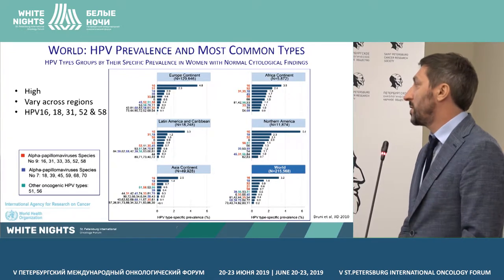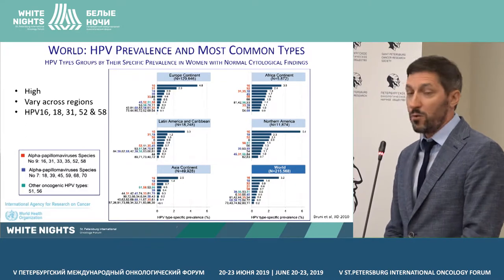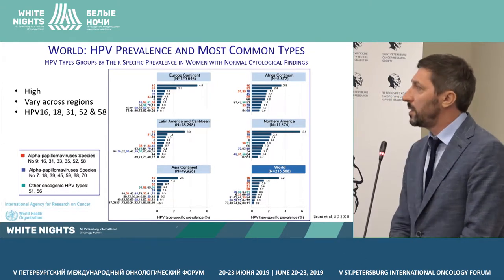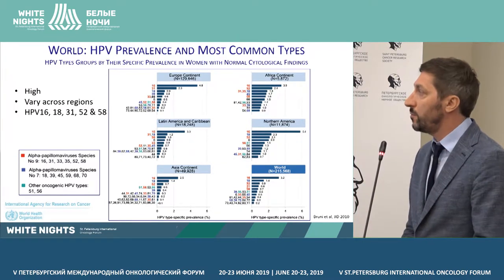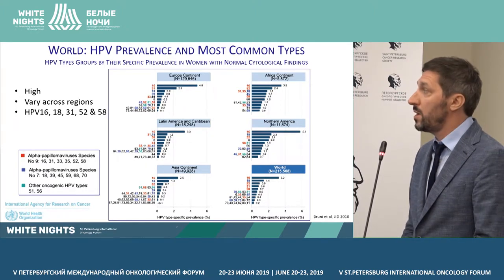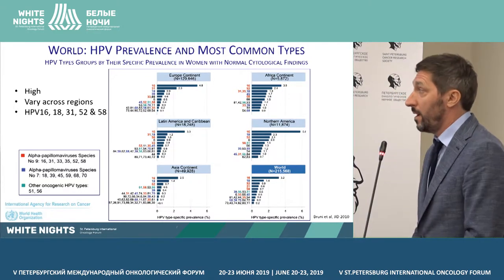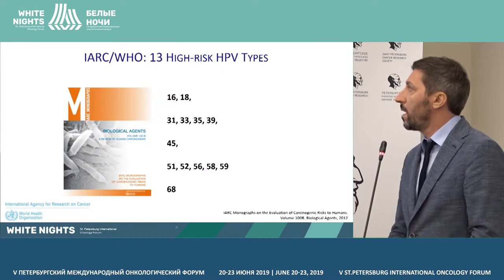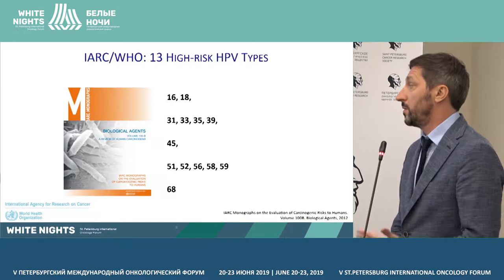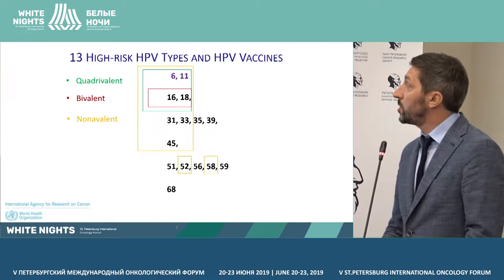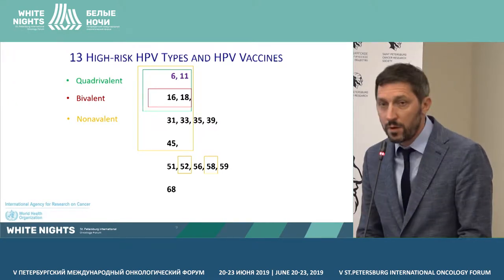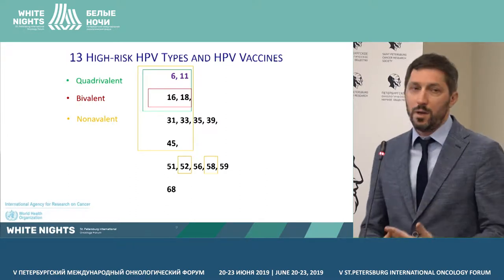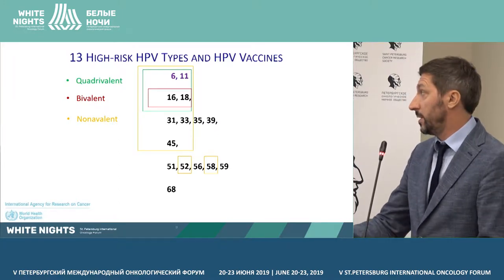What are the most prevalent types in the world? A major article analyzed data for over a million women from five continents with normal cytological pictures. On the whole, HPV 16, 18, 31, 52, and 58 prevail in most regions of the world. The Agency for Cancer Studies data from 2012 identifies 13 major types, and nine are covered by present-day vaccines — including the nine-valent vaccine.